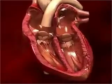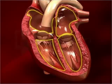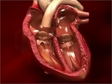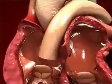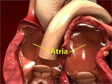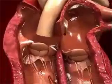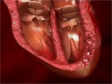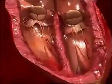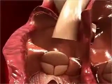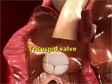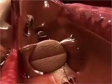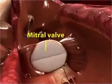Internally, the heart is divided into four chambers — two upper and two lower. The upper two chambers are called atria, and the lower two are called ventricles. The right atrium opens to the right ventricle via the tricuspid valve, while the left atrium opens to the left ventricle via the mitral valve.